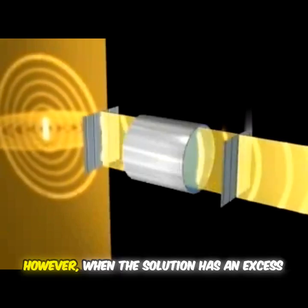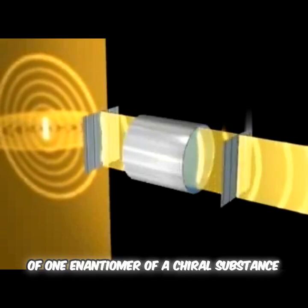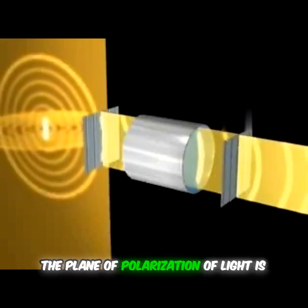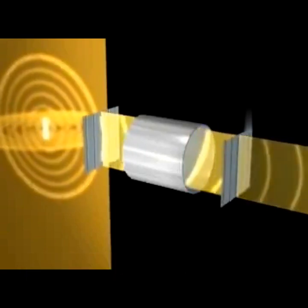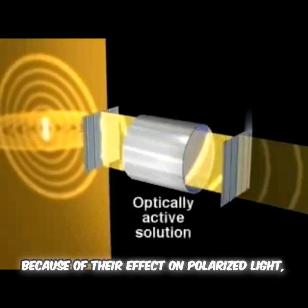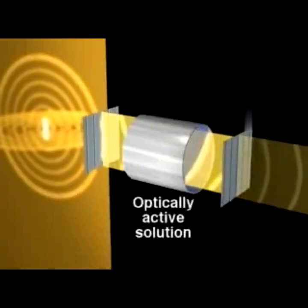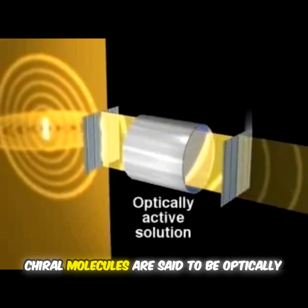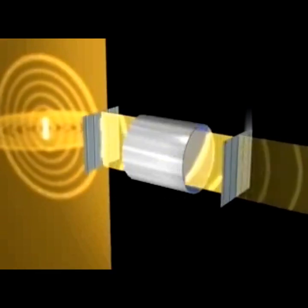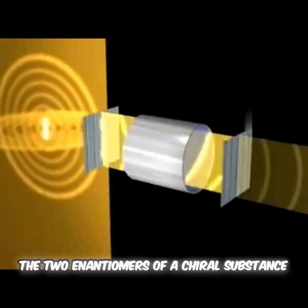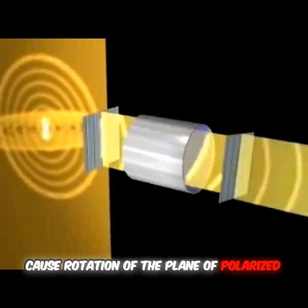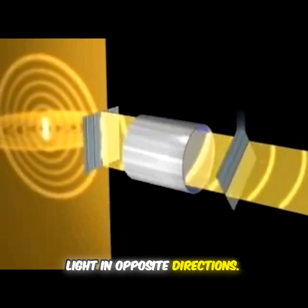However, when the solution has an excess of one enantiomer of a chiral substance, the plane of polarization of light is rotated. Because of their effect on polarized light, chiral molecules are said to be optically active. The two enantiomers of a chiral substance cause rotation of the plane of polarized light in opposite directions.